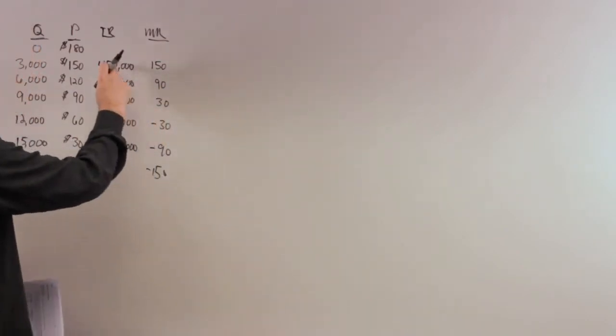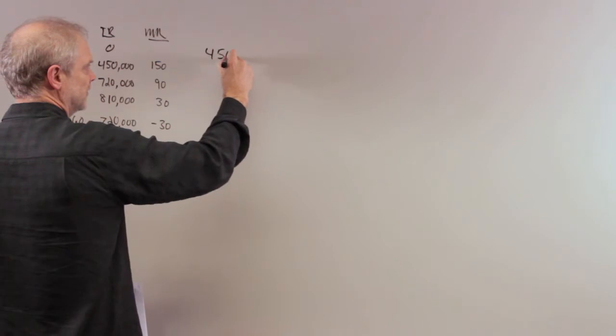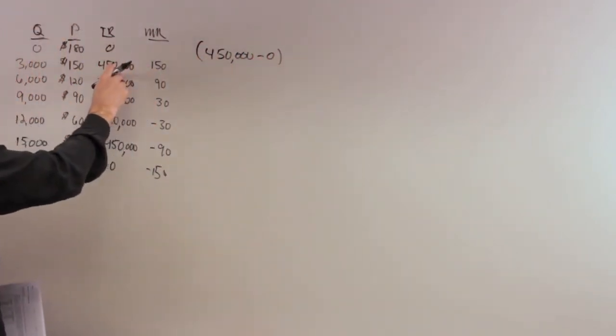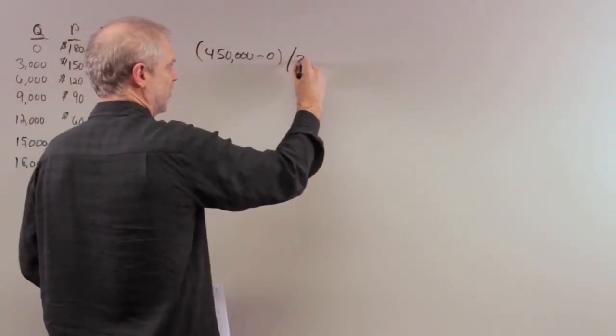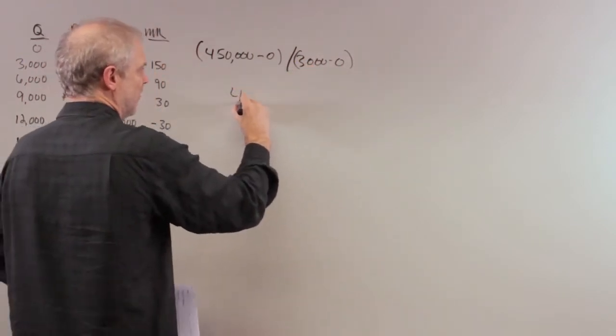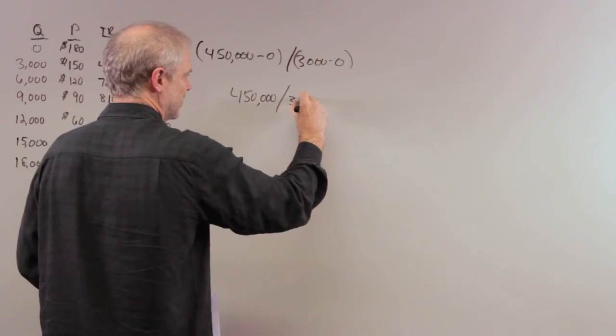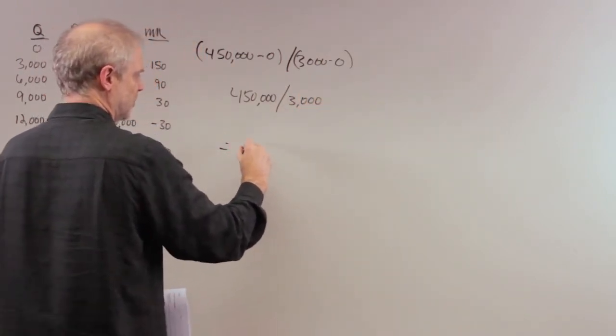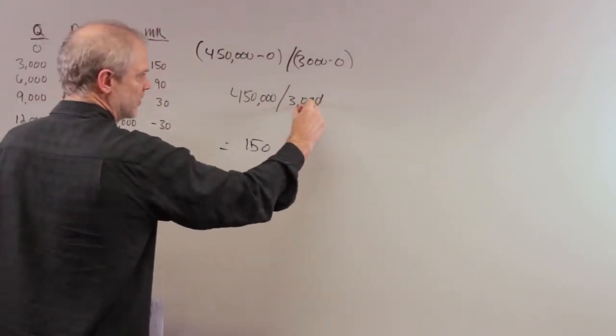Marginal revenue is the change in total revenue given a change in Q. Total revenue goes from zero to 450,000 as output goes from zero to 3,000. So we've got 450,000 divided by 3,000, which equals 150.